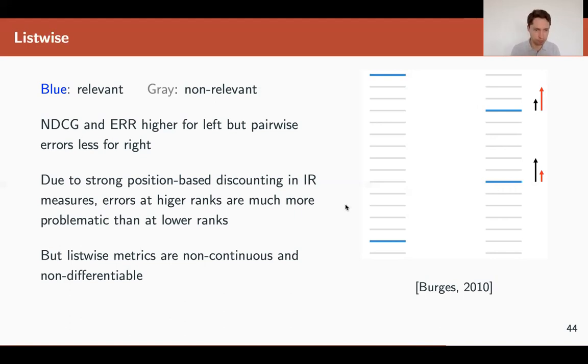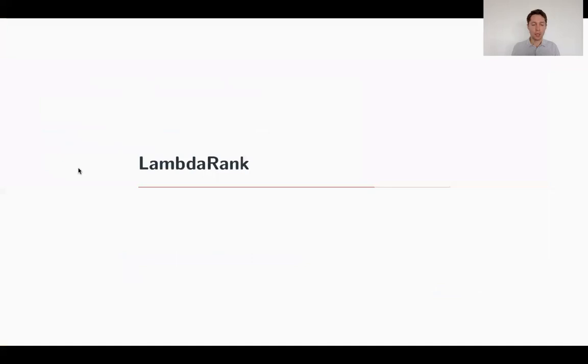Now, we can't do that because the metrics like NDCG or ERR are non-continuous and non-differentiable. So what do we do? Now, you remember the approach RankNet. This is the approach that builds on top of it, which is called LambdaRank. And lambda actually comes from those lambdas that we discussed as forces in the previous video.